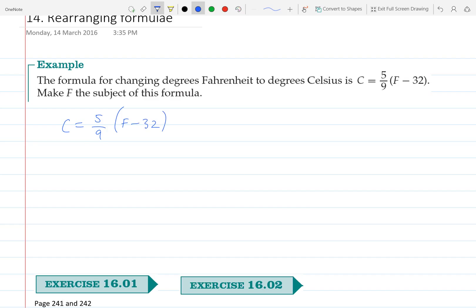We'll start by doing the inverse of 5 over 9, so we'll multiply both sides by 9 over 5. They cancel out with their respective parts there, and we have 9 over 5C equals F minus 32.